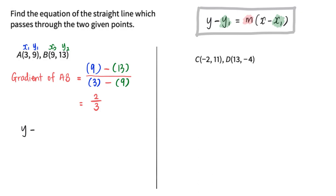So my y1 will be 9 equals to—it will be good to put brackets when we substitute values in—gradient is 2/3 multiplied by x minus x1, which is 3.